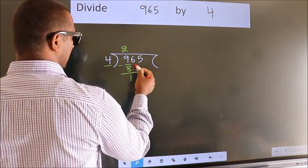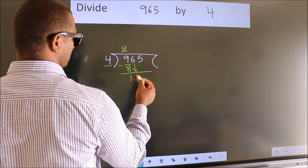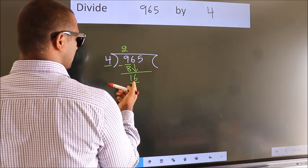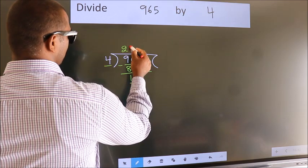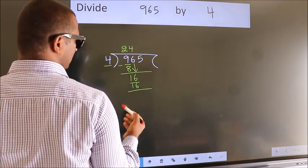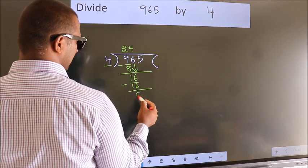After this, bring down the beside number. So, 6 down. So, 16. When do we get 16? In 4 table. 4 fours, 16. Now, we subtract. We get 0.